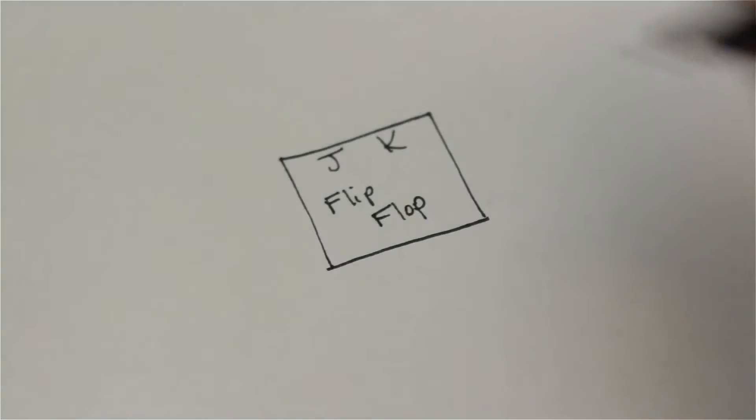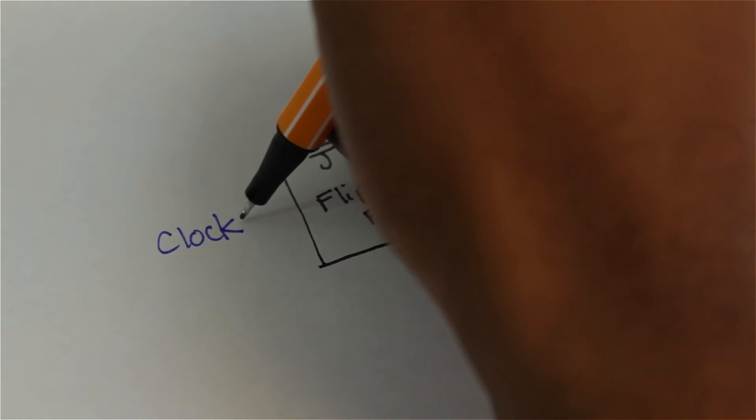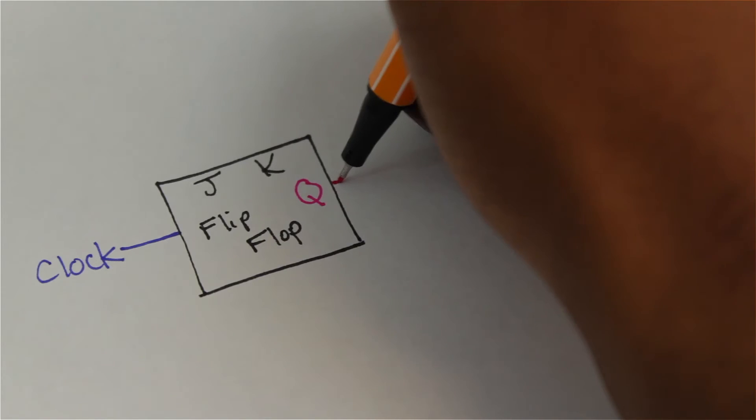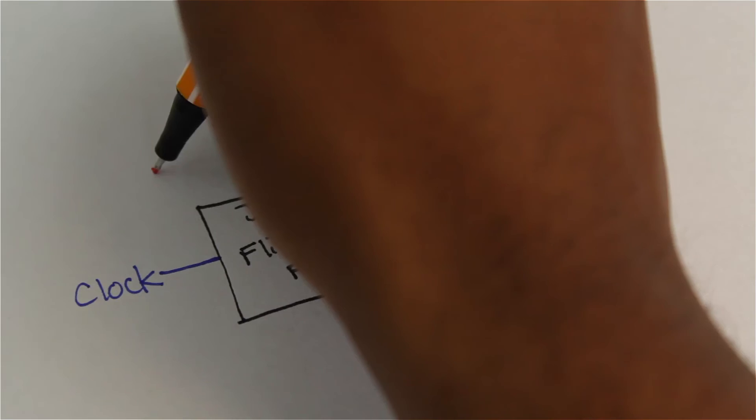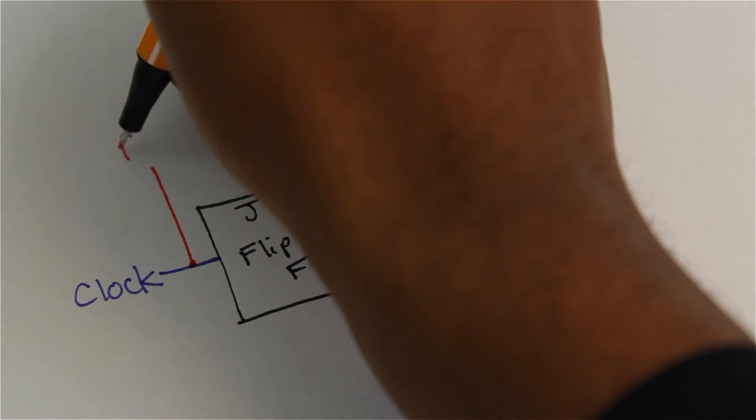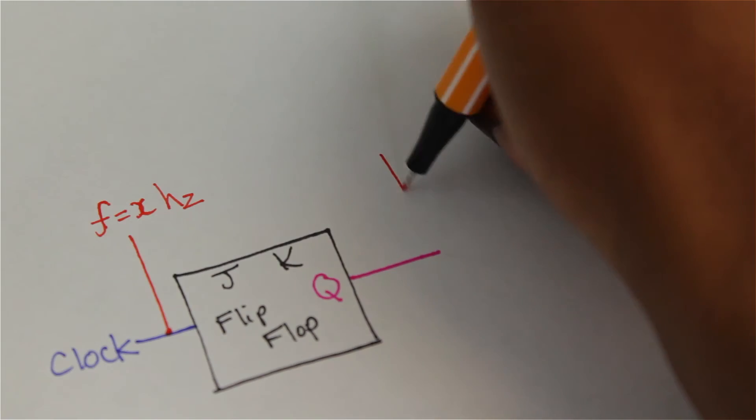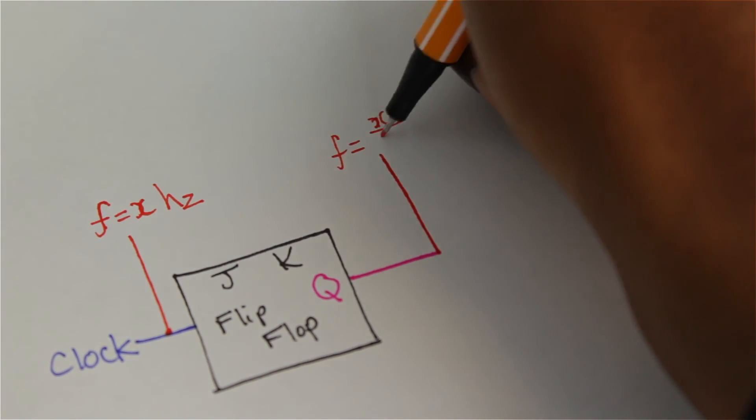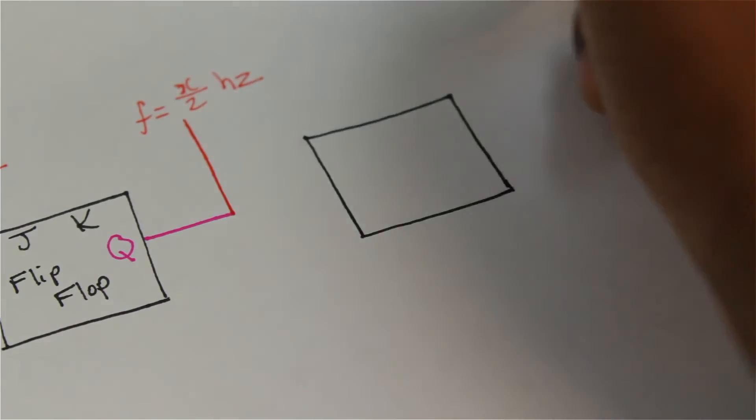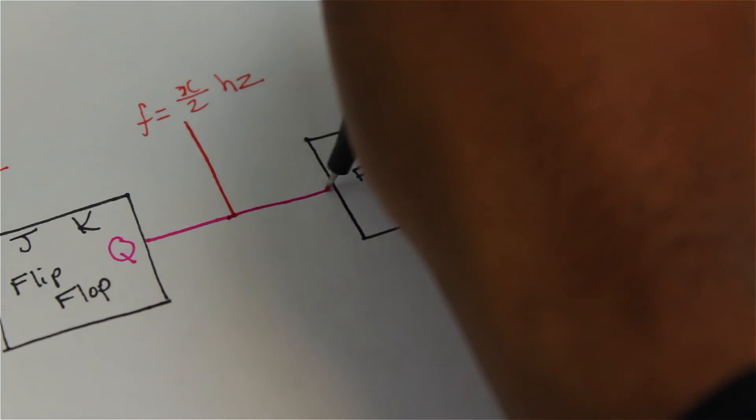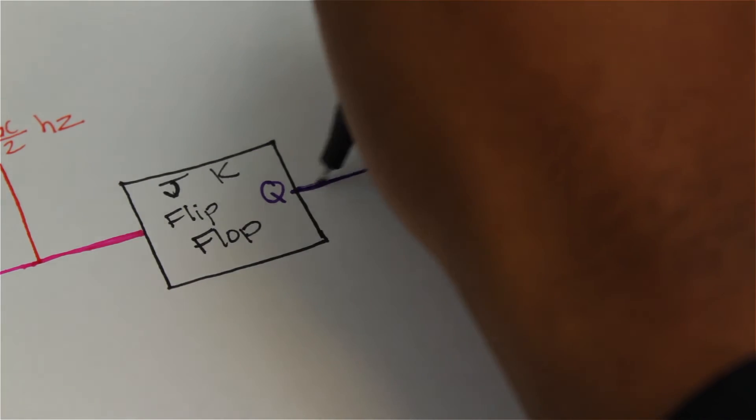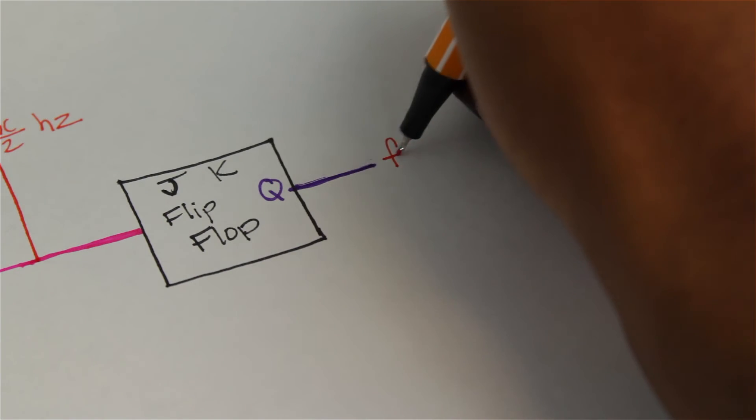If we daisy-chain these JK flip-flops together, we could keep reducing the clock by a factor of 2 to the N, where N is the number of flip-flops. The clock comes into the first one and its output is Q. The signal that came in has a frequency of X Hertz. Q will have a frequency of X divided by 2 Hertz. If we put a second one where Q goes into the clock input of the second flip-flop, then the output of that will be even slower. Its frequency will be X divided by 4 Hertz.